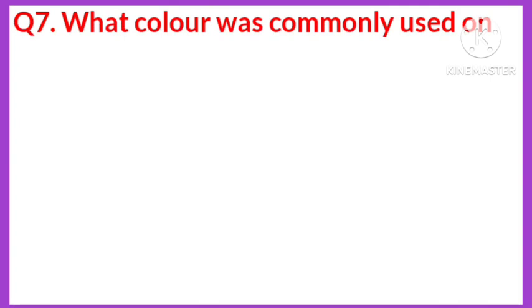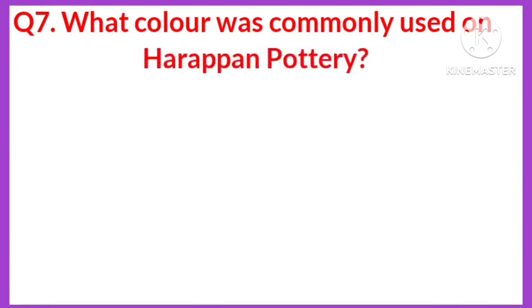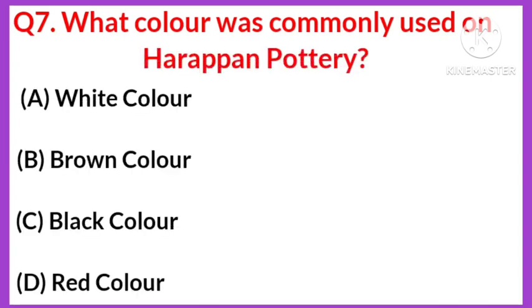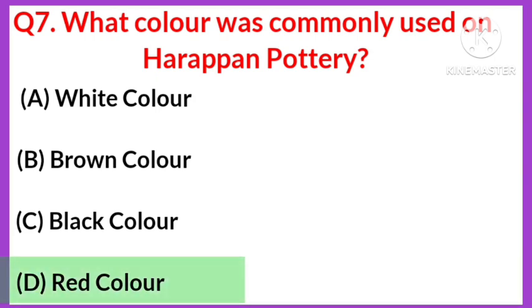Question number seven: what color was commonly used on Harappan pottery? Your options are: A) White, B) Brown, C) Black, D) Red. The right answer is option D, red color.